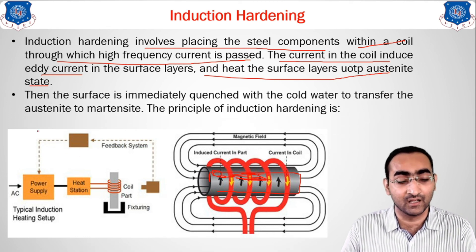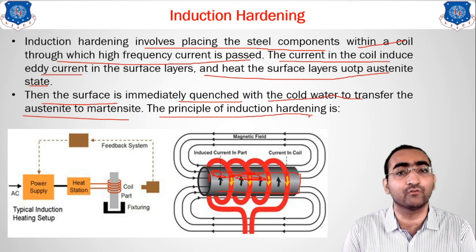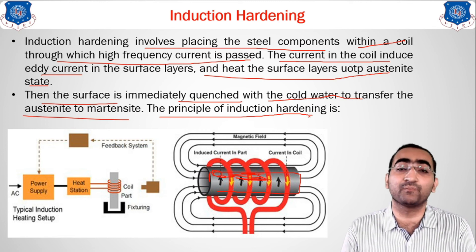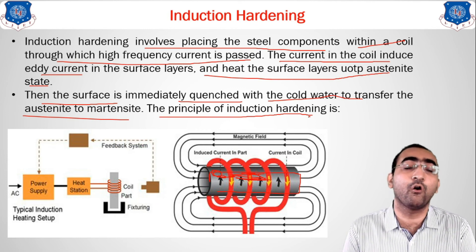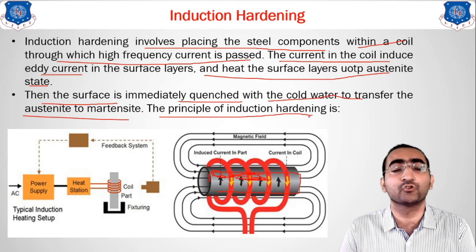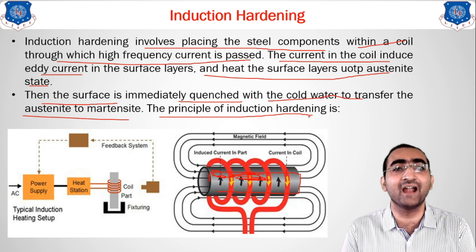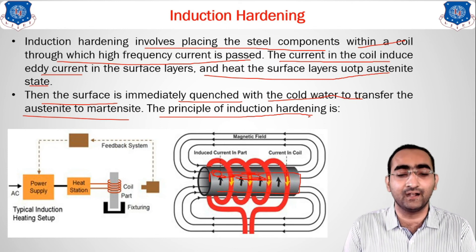After the surface is heated to the austenitic range by the eddy current, the surface is immediately quenched with poured water to transform austenite to martensite. The eddy current heats the specimen, and then immediate quenching is applied. Only the surface is heated and rapidly cooled, resulting in a hard surface.